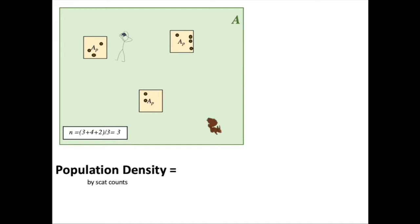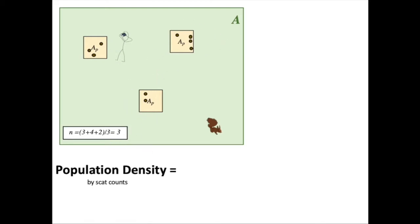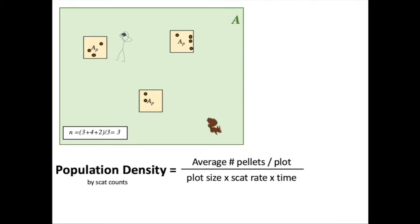When you do the scat counts, you're going to set up a bunch of scat plots, return to each plot after a certain number of days having cleared the scat, and count the average number of pellets per plot. In this case, one plot had three pellets, one had four, and one had two, giving an average of three pellets per plot. You take that average, divide by plot size, the scat production rate, and the time you left things out. You can also multiply by your total survey area to convert to population size.